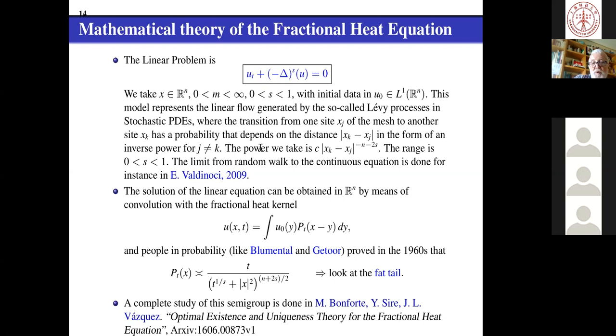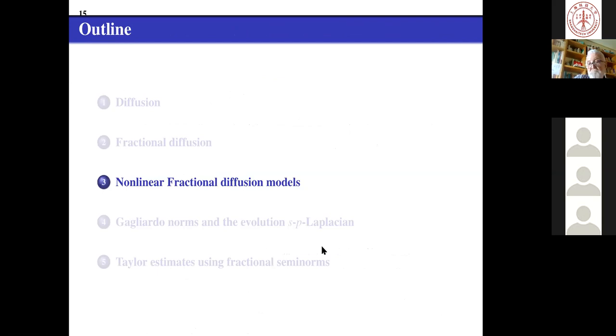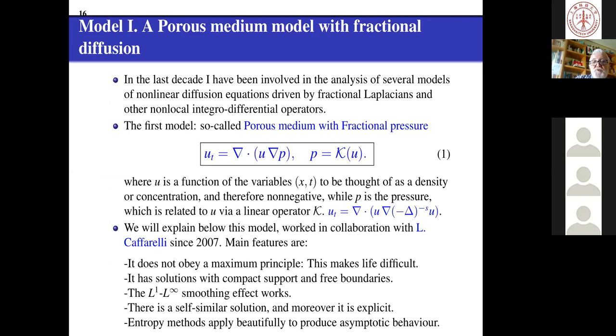This was taken by some people in probability who were very good and used this and they discovered that the kernel is not like a Gaussian but decreases in x like a power and this is the famous fat tail of the fractional heat distributions. We wrote the paper, Matteo Bonforte, Yannick Sire and myself, doing all the optimal existence and uniqueness theory for the fractional heat equation in the largest possible classes of initial data. This is not very difficult, we did it. So let me tell you what is the nonlinear fractional diffusion that we wanted to do.